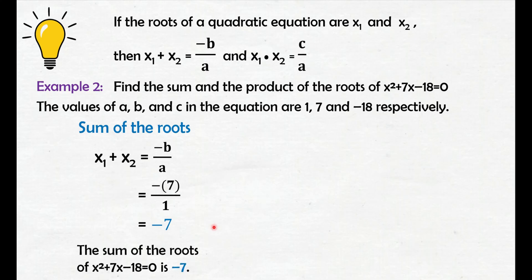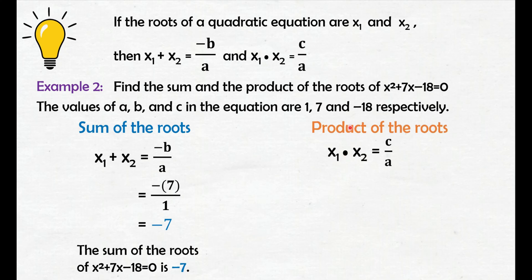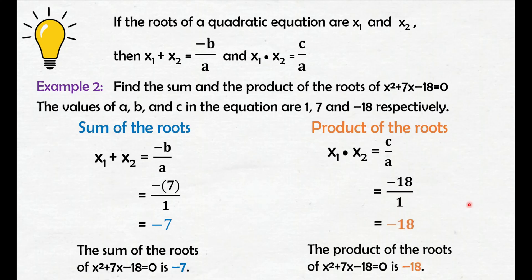So, the sum of the roots of x squared plus 7x minus 18 equals 0 is negative 7. For the product of the roots, use the formula x sub 1 times x sub 2 equals c over a. Substitute c and a: c is negative 18 and a is 1. Negative 18 divided by 1 is negative 18. So, the product of the roots of x squared plus 7x minus 18 equals 0 is negative 18.